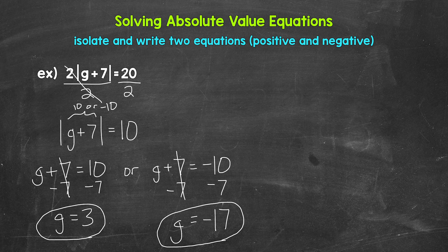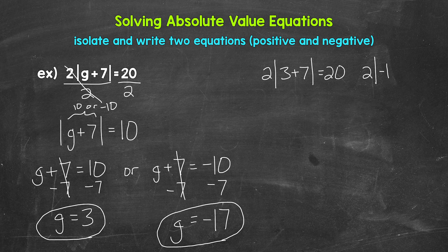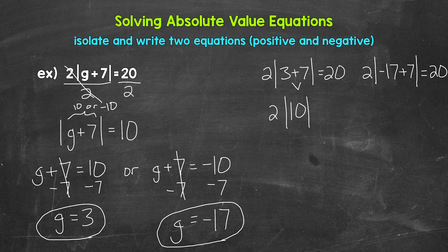Now let's check those solutions by plugging them in for g and seeing if they work. We have 2 times the absolute value of 3 plus 7 equals 20. Let's start: 3 plus 7 is 10, so we have 2 times the absolute value of 10. The absolute value of 10 is 10, so now we have 2 times 10, which is 20. So we are correct there — g equals 3.